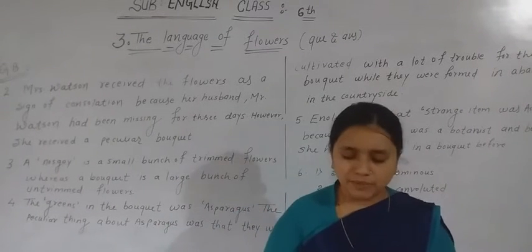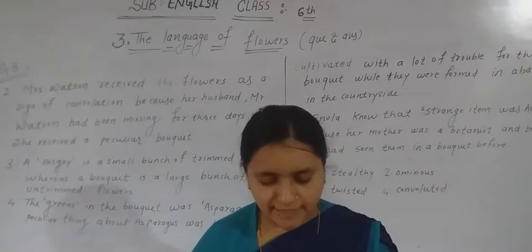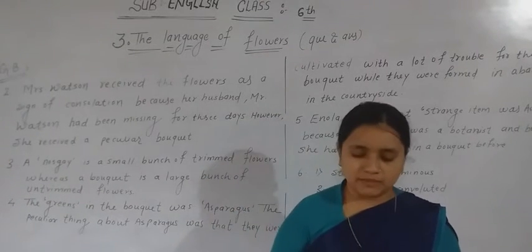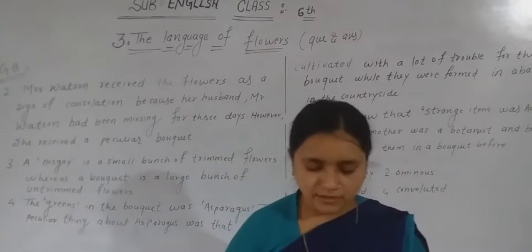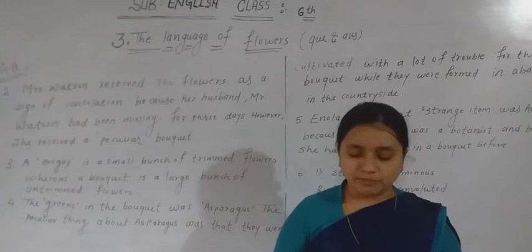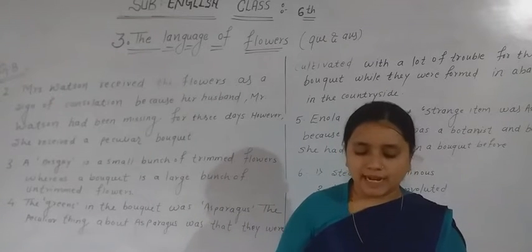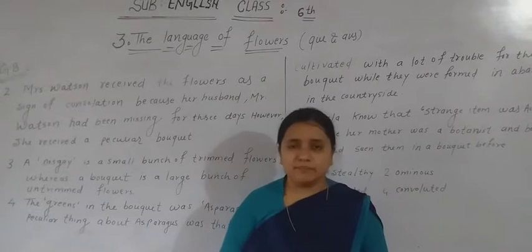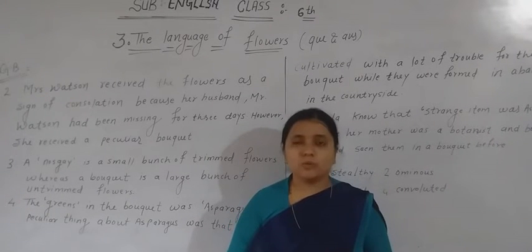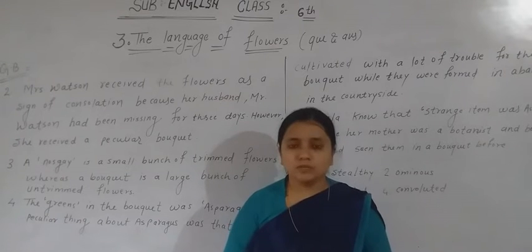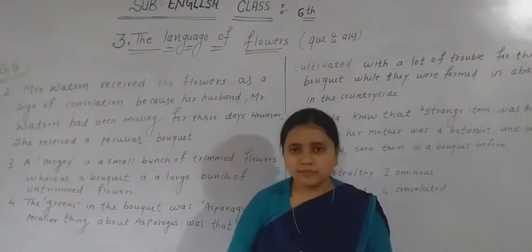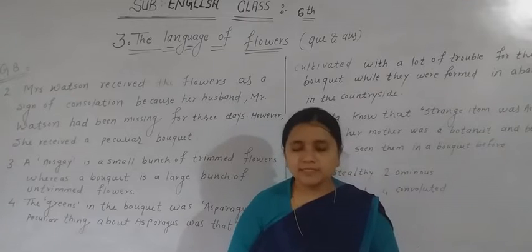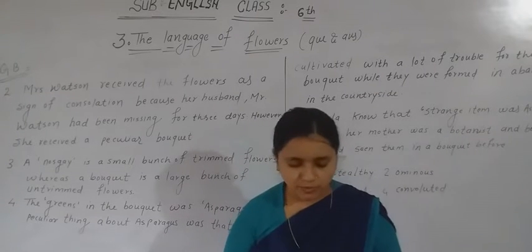Now for the next exercise: answer these questions in brief. First, label the flowers in the bouquet received by Mrs. Watson. You can see a picture of the bouquet and some flower names are missing — you have to write them in. This is your homework: try it yourself first and then I will explain it tomorrow.